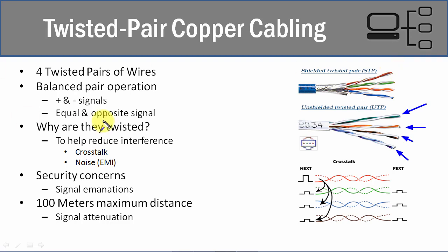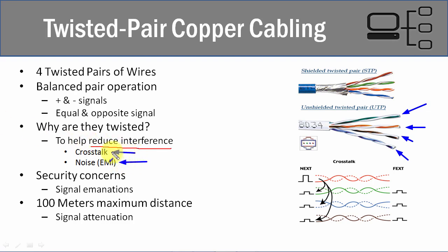A bigger question is why are they twisted together? You could easily just create this network cabling, bundle it together, and not twist them. But there is a specific reason why they are twisted together, and that's to help reduce interference — specifically electromagnetic interference and crosstalk.